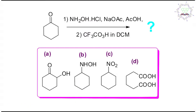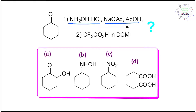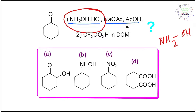I believe you have done it by yourself, so it's my turn to give you the right answer. Here you can see it's actually a ketone — cyclohexanone. In the first step, hydroxylamine hydrochloride, sodium acetate, and acetic acid are taken — it's a buffer system. From the hydrochloride salt, the active nucleophile hydroxylamine is generated for Schiff base or imine formation.